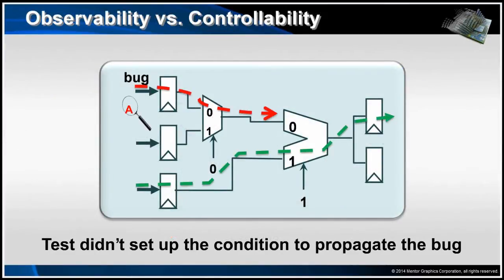This is an example where stimulus might activate a line of code that contains an error. The input stimulus might even partially propagate the error, but the input stimulus didn't completely propagate the error to an observable point. You can see in this example that the last MUX stage wasn't set up properly to propagate the error. The error would go undetected in simulation in this case.